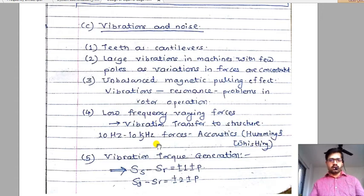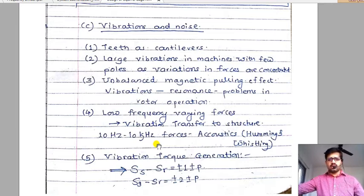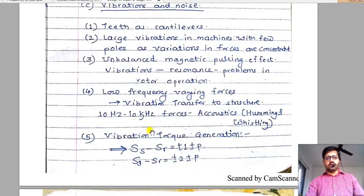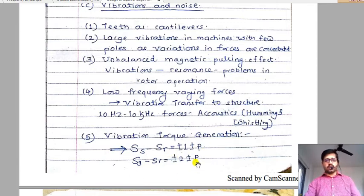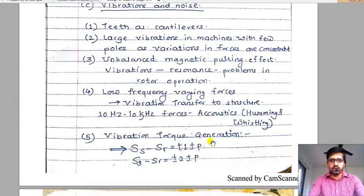Now let us continue to understand more points related with vibrations and noise. Vibration torque generation can be mathematically modeled with two different formulae — these are based on research, not formally approved. One formula is: the difference between stator and rotor number of slots equals ±1 ± p. Another formula is: the difference between stator slots and rotor slots equals ±2 ± p. Let us focus on these and understand what values of p are acceptable.